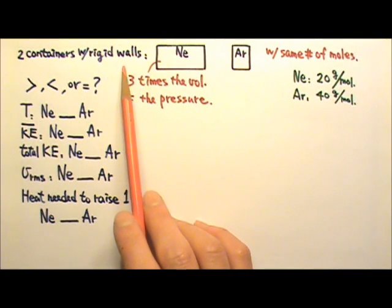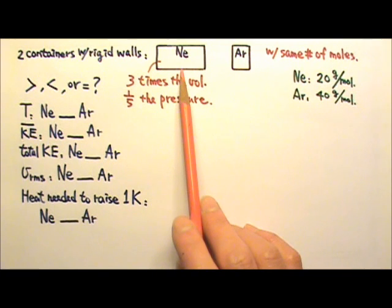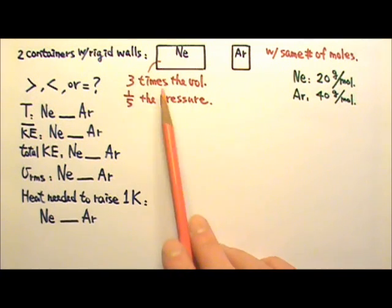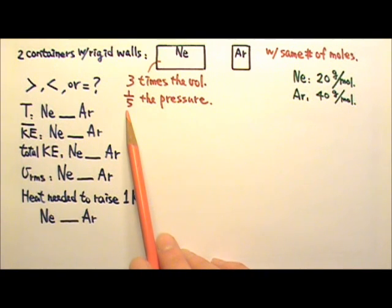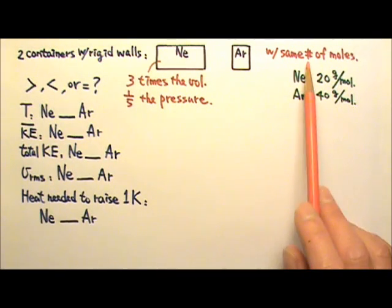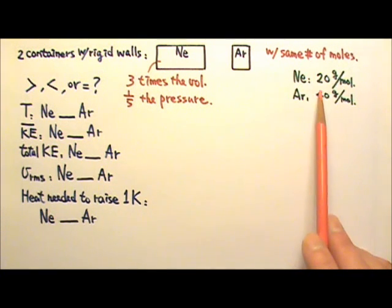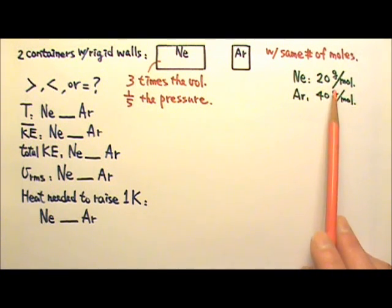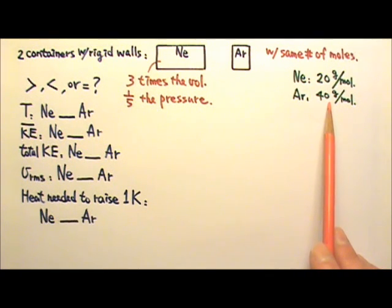There are two containers with rigid walls. The first container holds neon gas and has three times the volume of the second container with argon gas. The neon has one-fifth the pressure of argon. There are the same number of moles in the two containers. Neon has a molar mass of 20 grams; argon has a molar mass of 40 grams.